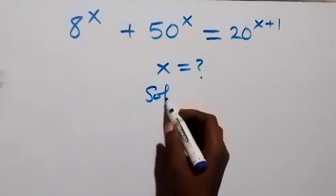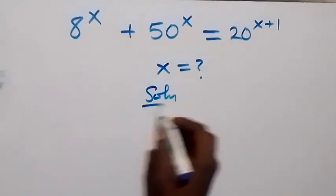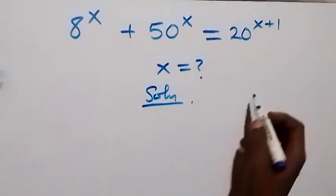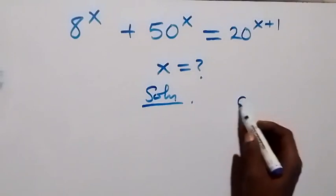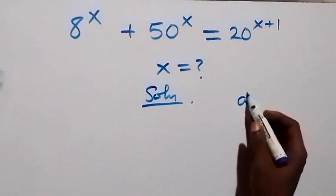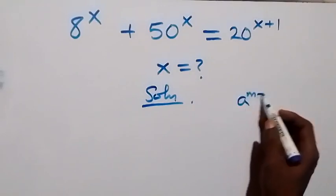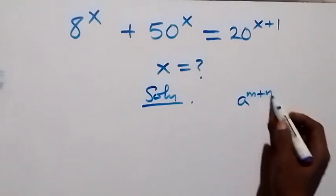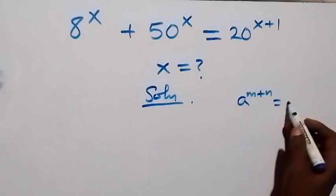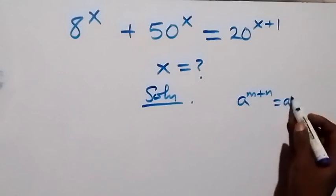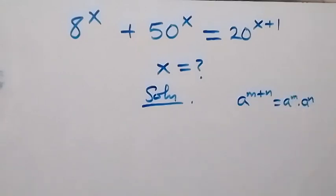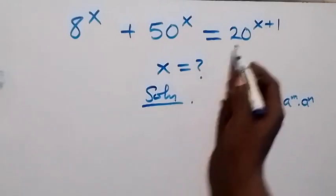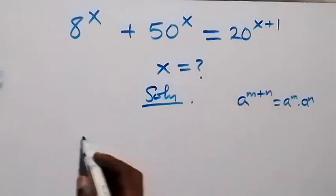From what is given, we can rewrite it and apply the law of indices. When we have a raised to the power m plus n, this gives us a raised to the power m times a raised to the power n. So applying this here,